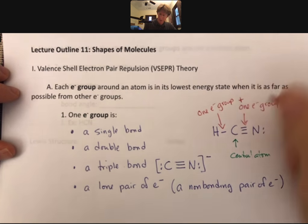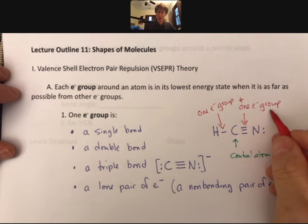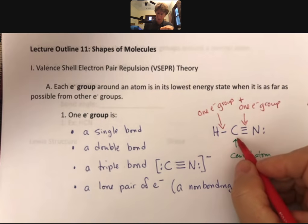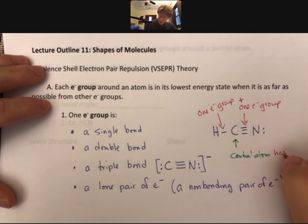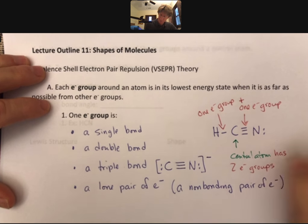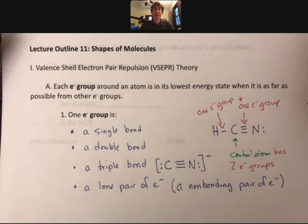Around this central atom, the central atom has two electron groups. And that's a little demonstration of the process of what electron groups are and counting them.